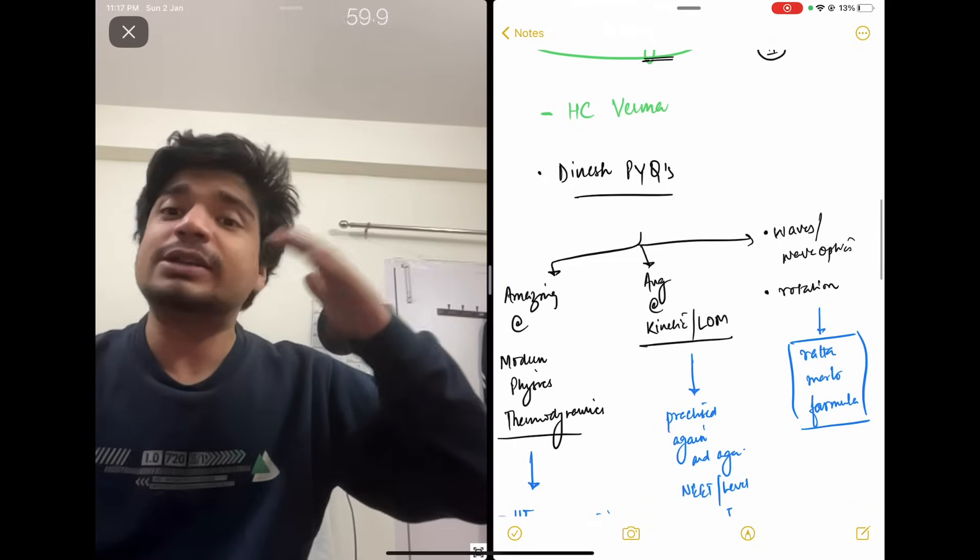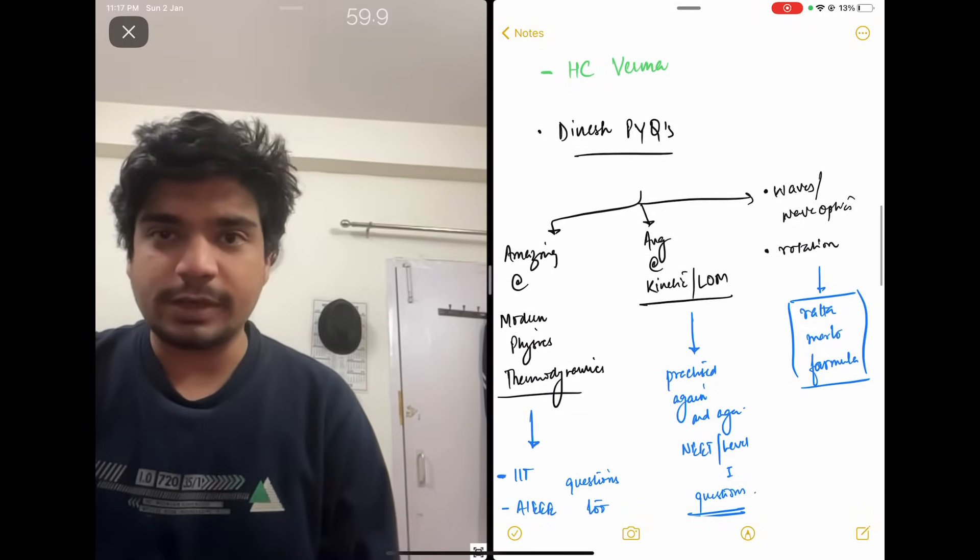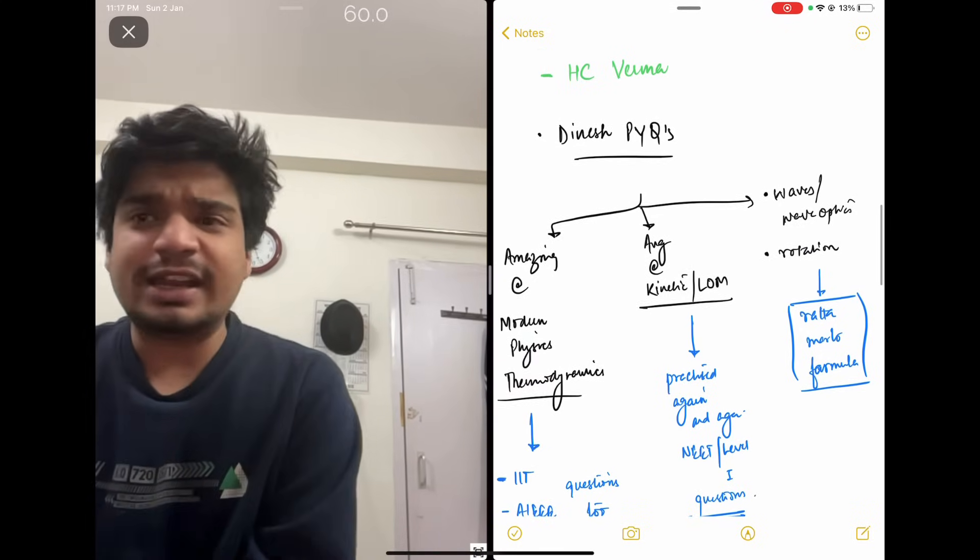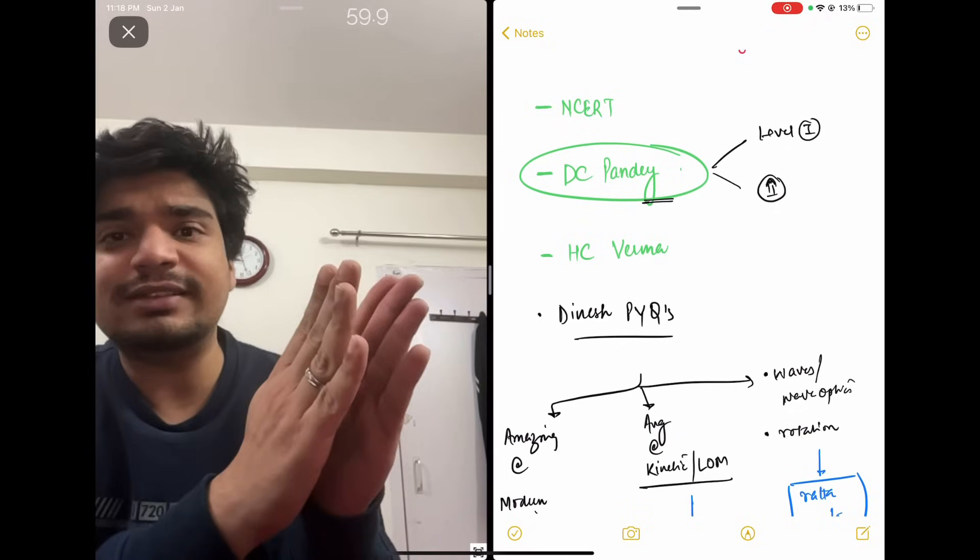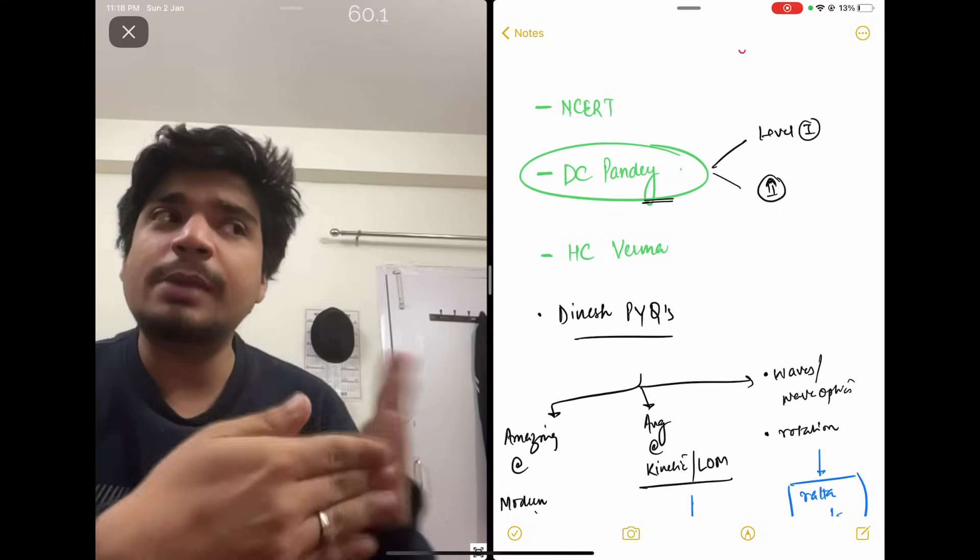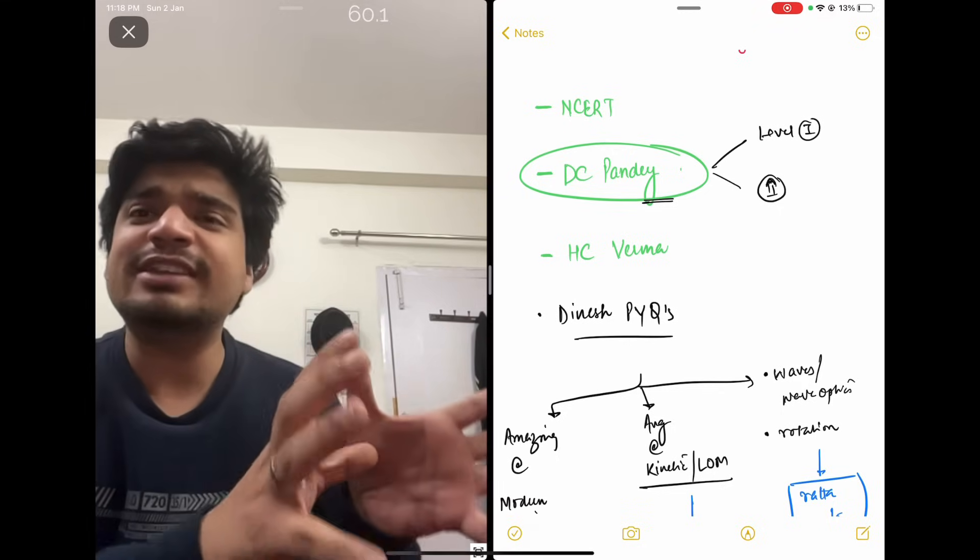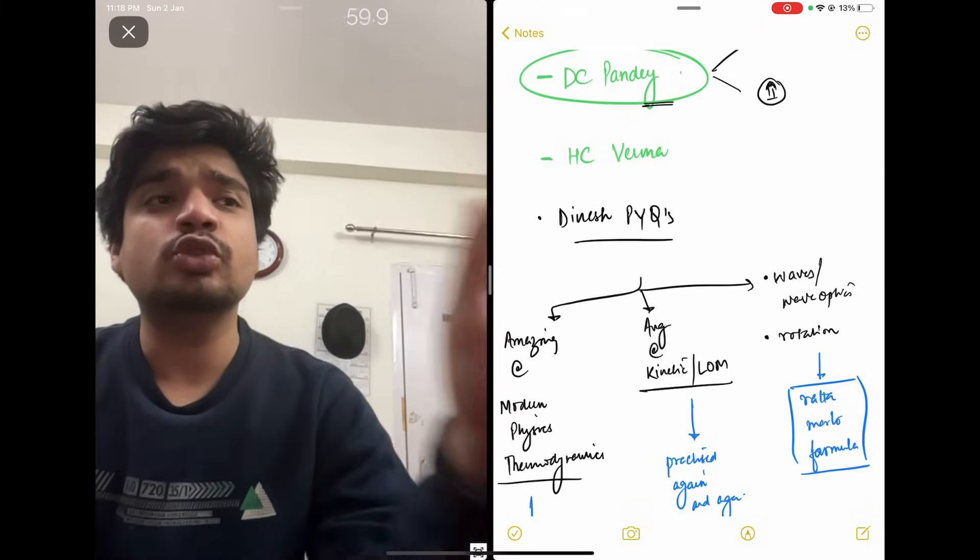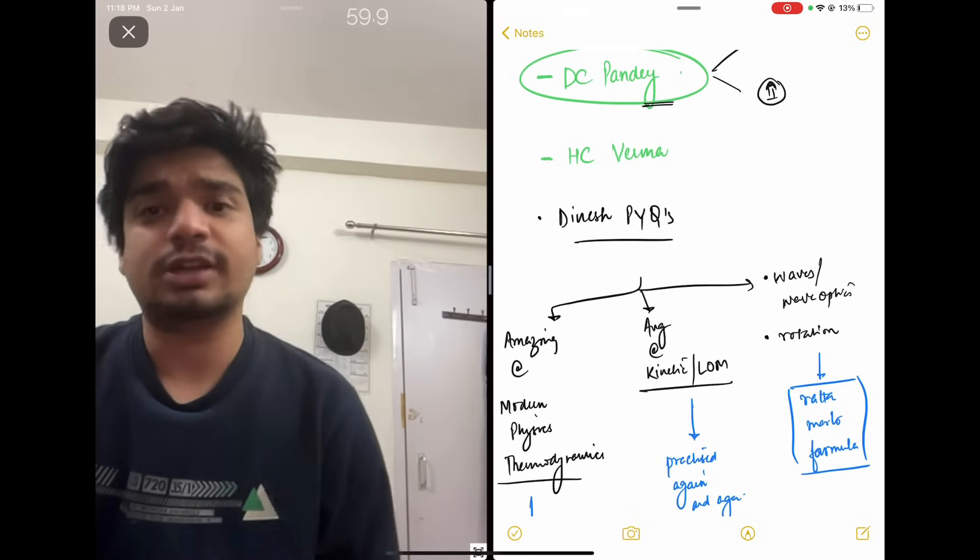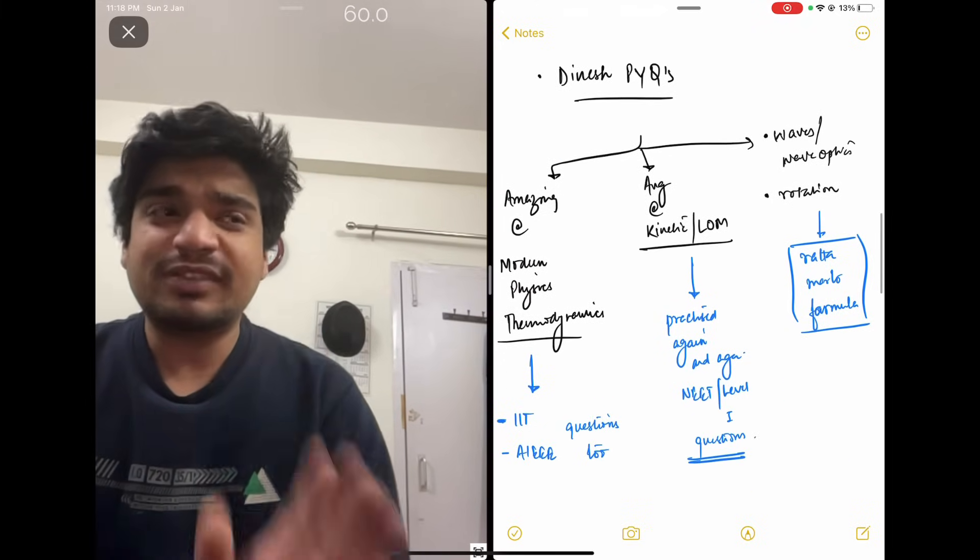I was amazingly good in modern physics and thermodynamics. So what I used to do, in order to practice previous year questions, I used Dinesh along with IIT-JEE and AIEEE papers as well. The topics I was average at, kinetics and laws of motion and things like that, I restricted myself to level 1 questions in DC Pandey and previous year questions. In which I was weak, I memorized the formulas.